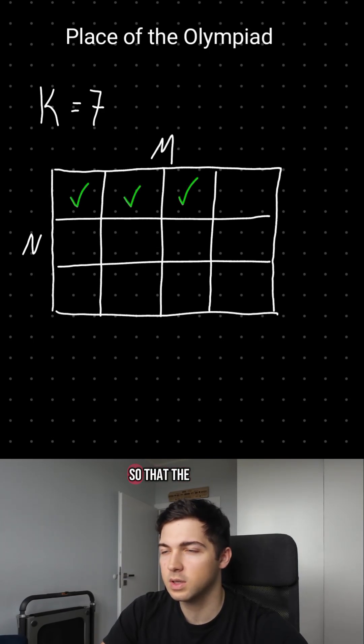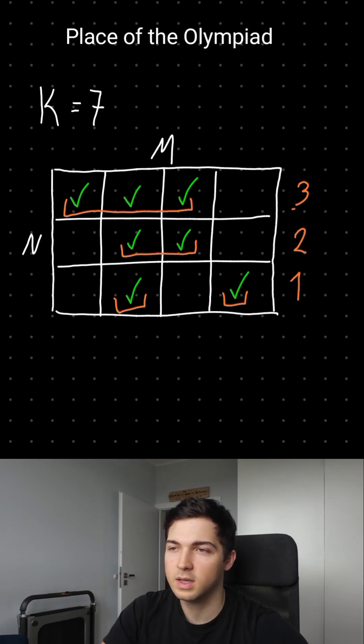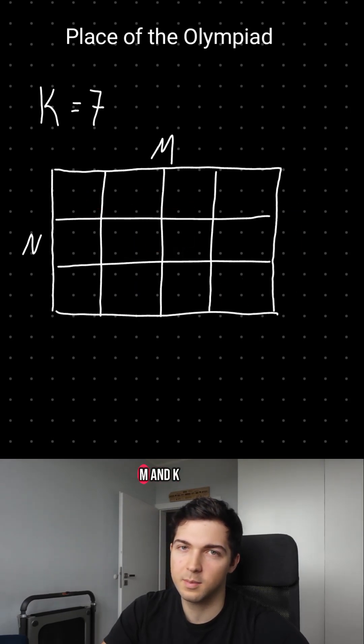We want to seat all of the people so that the longest sector of adjacent occupied seats in the same row is as short as possible. Calculate the answer given n, m and k.